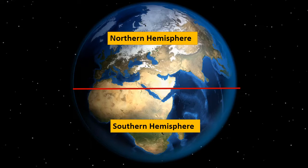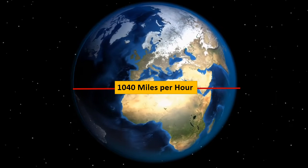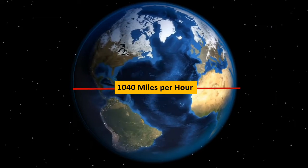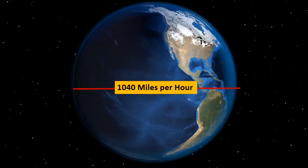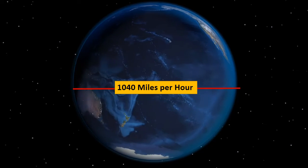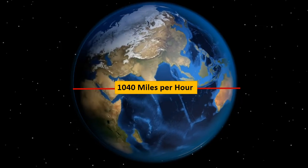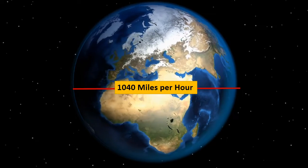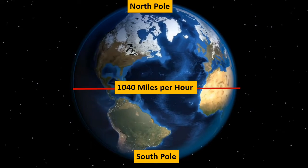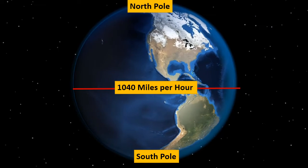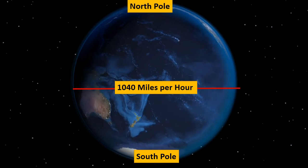Now let's talk about similarities. The major similarity is that both hemispheres share the equator. The Earth rotates at a speed of around 1,040 miles per hour at the equator. The speed of a person at the equator is fast because it covers more distance in the same time, but the speed of a person at the North Pole and South Pole is about 0, because they have no distance to cover.